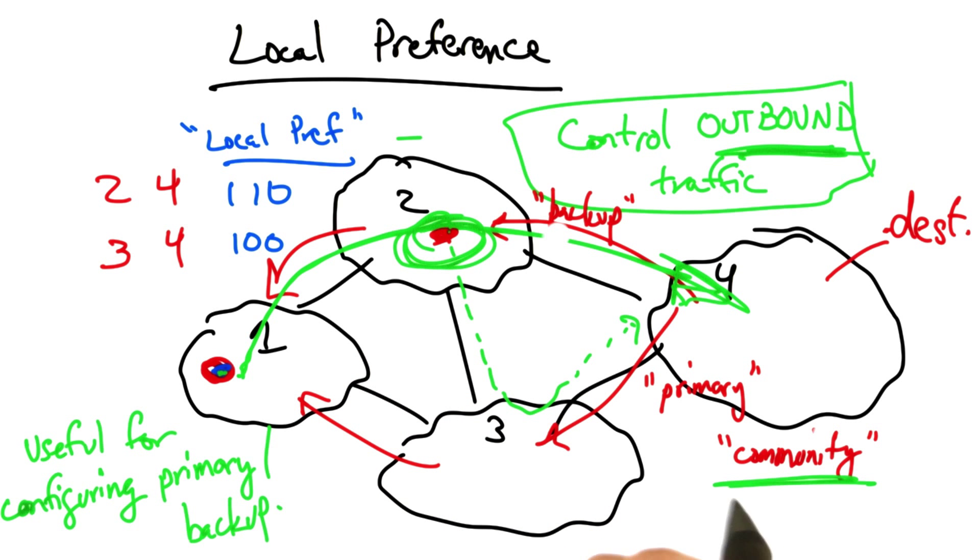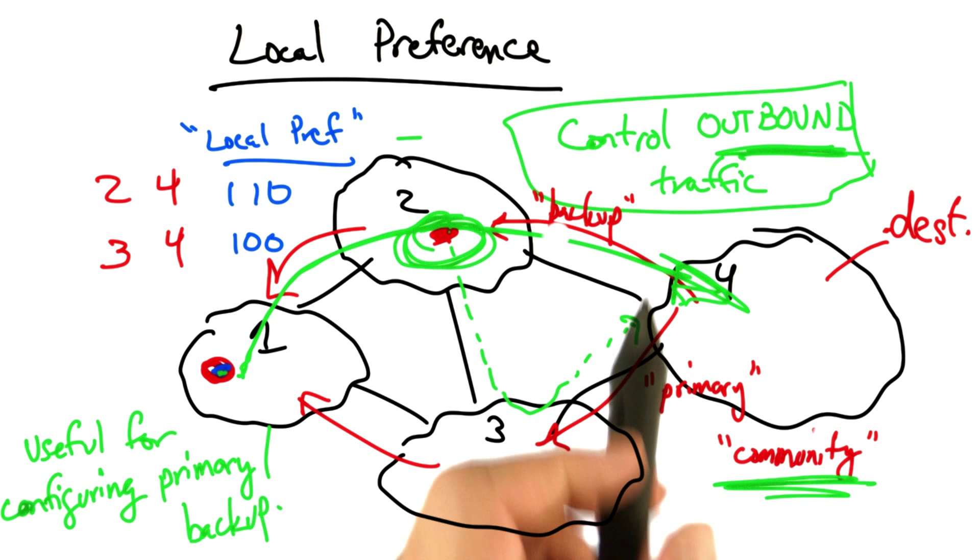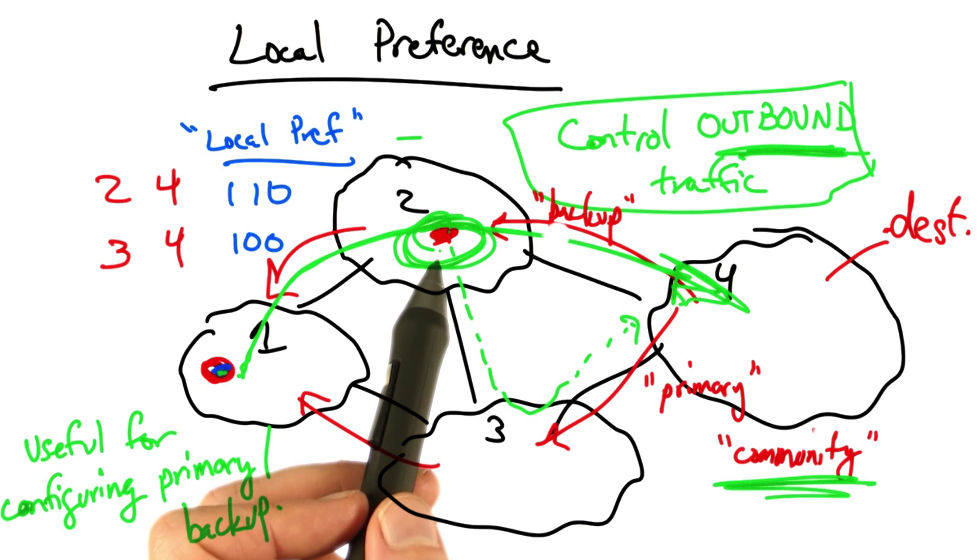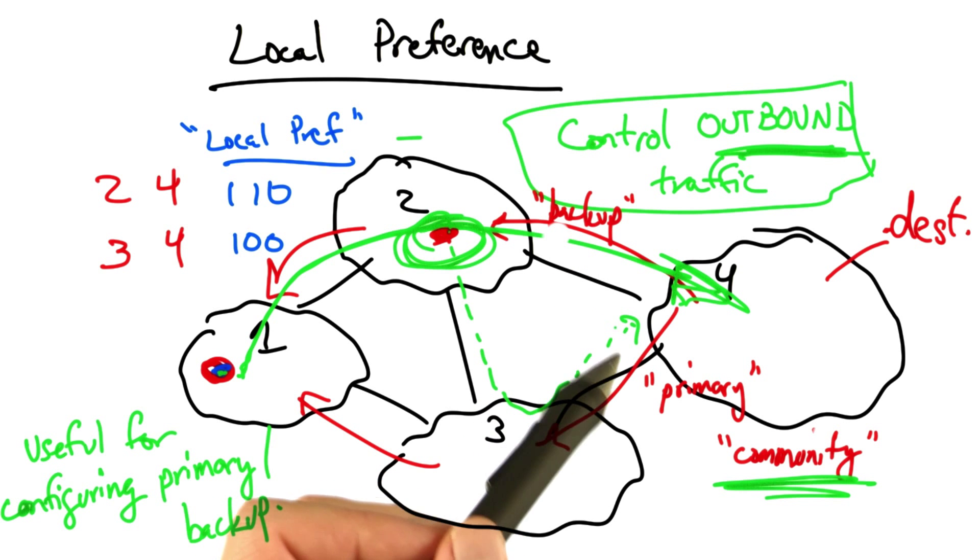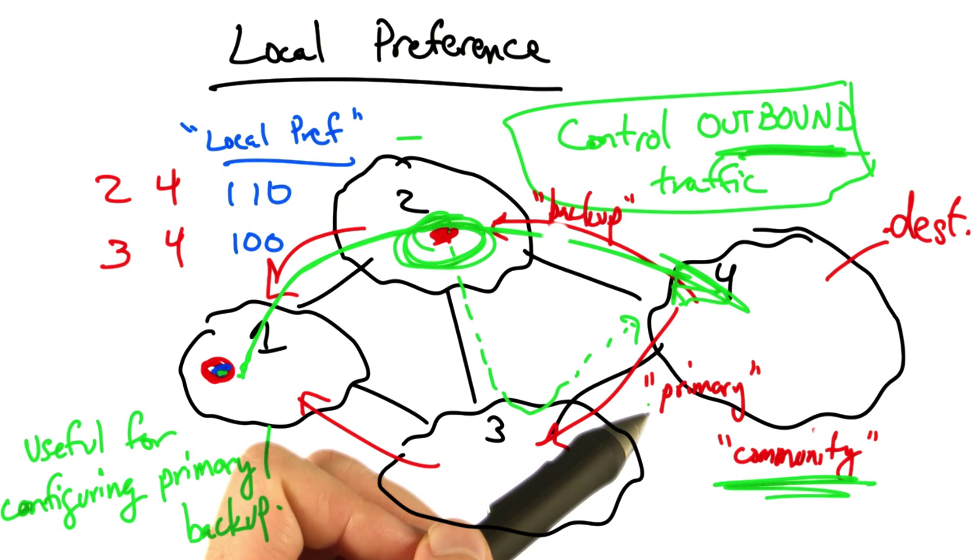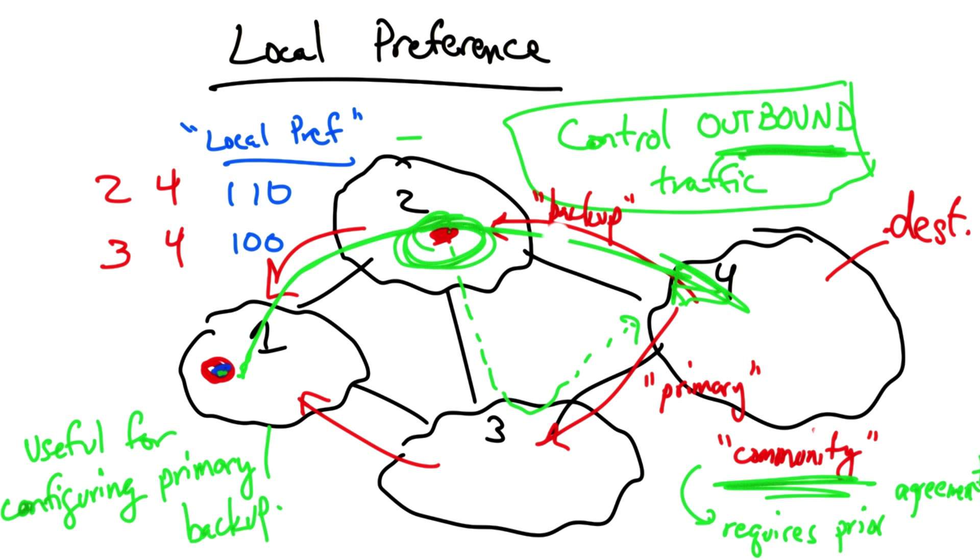But the use of a BGP community on the route advertisement can sometimes be used to cause a neighboring AS to make different choices regarding its outbound traffic. Thereby, allowing an AS to specify a primary or a backup path for incoming traffic. This type of arrangement requires prior agreement.